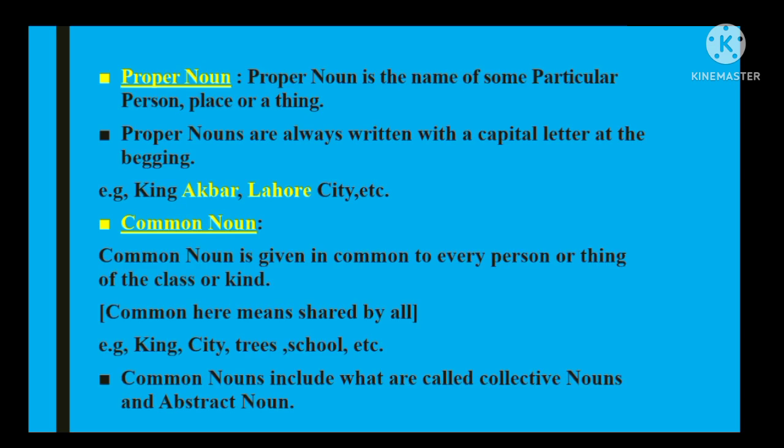Proper noun aur common noun ek doosre ke opposite hain. Proper noun is the name of some particular person, place or thing. Proper noun ko hum Urdu mein ism-e-ma'rifa bhi kehte hain — kisi khaas shakhs, jagah ya cheez ke naam ko kehte hain. Proper noun ka aaghaz hamesha English mein capital letters se kiya jaata hai. Jaise yahan example hai: 'King Akbar' — 'King' common noun hai aur 'Akbar' proper noun hai, is liye uska initial letter capital hai. Isi tarah 'Lahore' ek particular noun hai, is liye uska pehla letter capital hai.